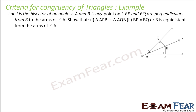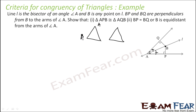Line L is the bisector of angle A, so these two angles are equal. B is any point on line L. BP and BQ are perpendicular to the arms of angle A. We have to prove that triangle APB is congruent to triangle AQB. Let's see what is given — we have a congruence to prove.